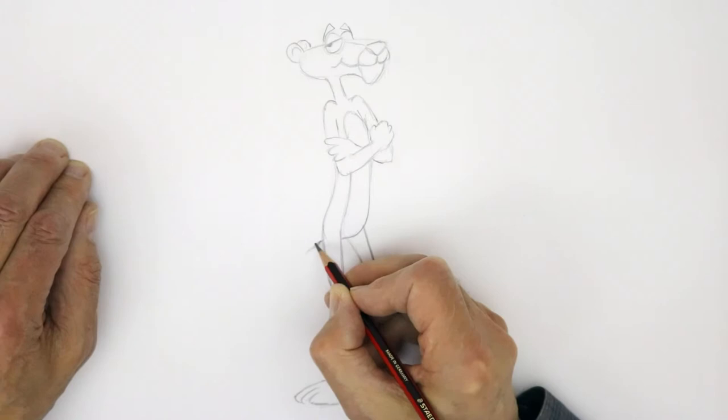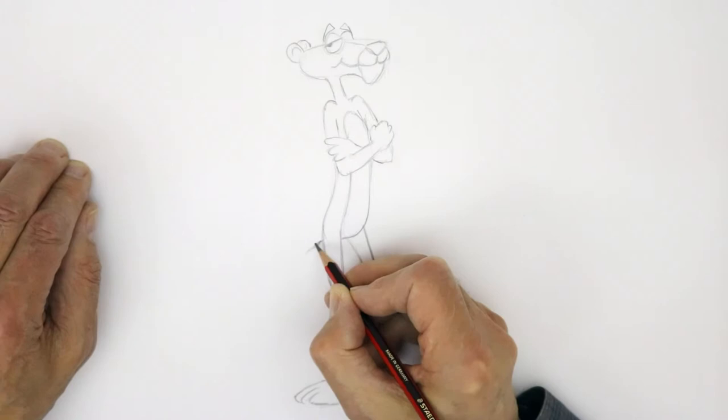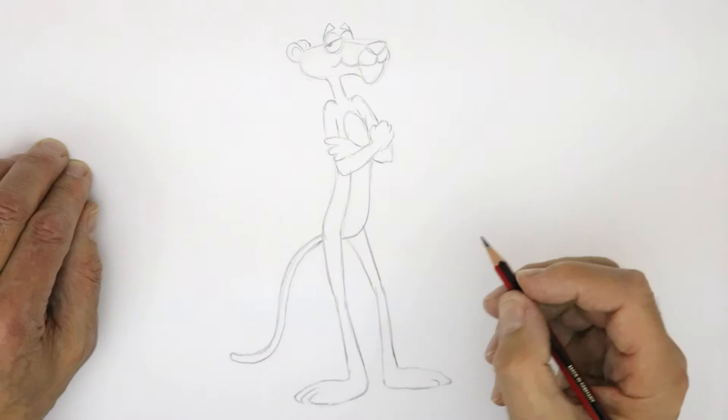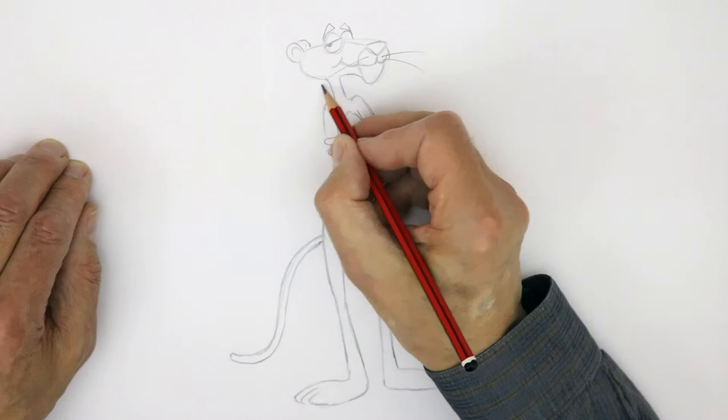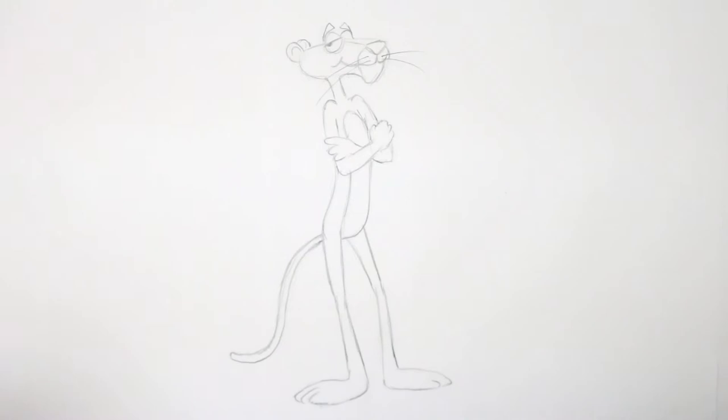And the tail comes out just above this line here, comes in about here, and a curve, a nice graceful curve, and it's a kind of parallel line all the way down. And his whiskers, one there, one there, and a couple there. So that's the shape of the Pink Panther sketched in for you.